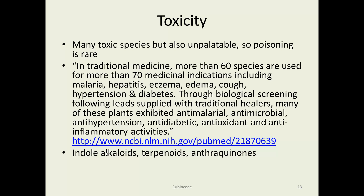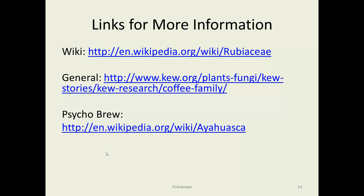The compounds generally responsible for the poison or the medicine — depending on the dose — are indole alkaloids such as dimethyltryptamine, terpenoids, and anthraquinones. For more information, there's Wikipedia. The Kew, a large garden near London in southern England, has quite a bit about the coffee family. And if you want to read about the ayahuasca brew made by native people in Peru, that's on Wikipedia as well. And that concludes the Rubiaceae.